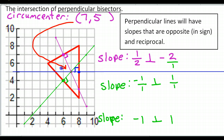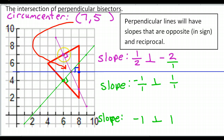Hopefully now you understand how to find the circumcenter coordinates when you have graph paper. All you really have to do is draw three perpendicular bisectors. Make sure you are using the midpoints of each side. As far as being perpendicular, use your slope — find the slope of the side, and then go opposite in sign and reciprocal. That will tell you the slope of your perpendicular bisector. Wherever they meet, that will be your circumcenter.